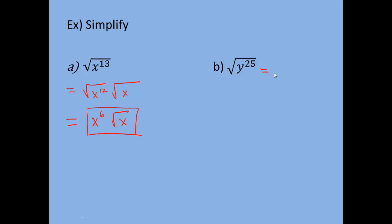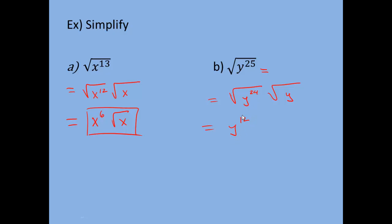Similarly for the square root of y to the 25th: y to the 25th is not a perfect square. Don't get confused by the 25 — for a variable to be a perfect square, it has to have an even exponent, so even though 25 is itself a perfect square number, the exponent here is odd. You want to break this down to the square root of a perfect square and the square root of a non-perfect square. The highest perfect square factor of y to the 25th is y to the 24th — always the closest even number to the odd power without going over. Times y to get y to the 25th. The square root of y to the 24th is y to the 12th (24 ÷ 2), and the square root of y stays, giving y¹²√y.